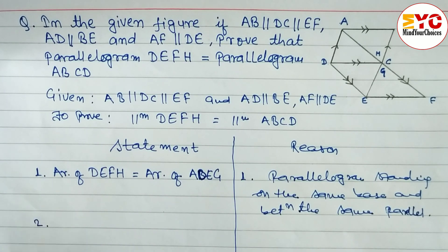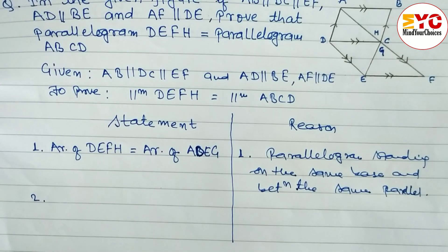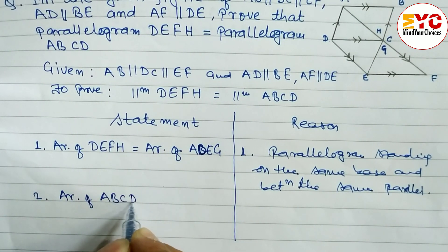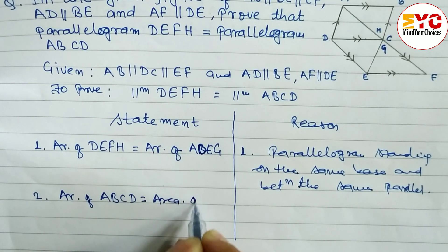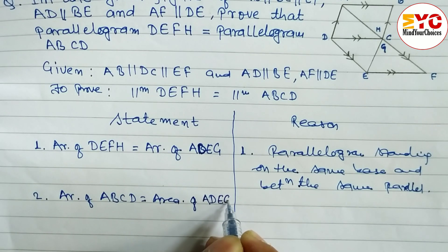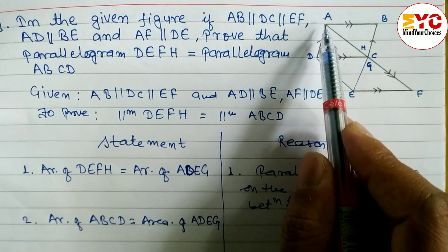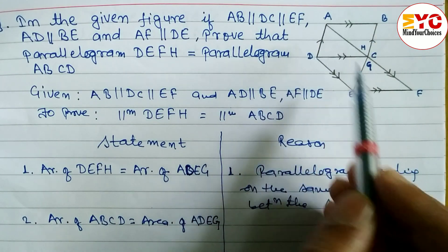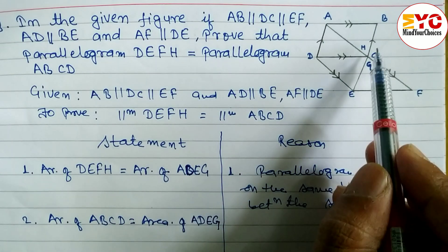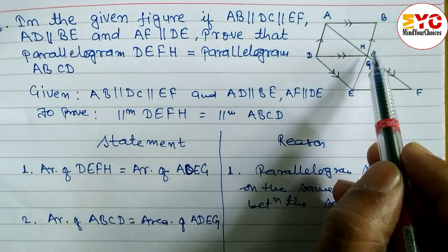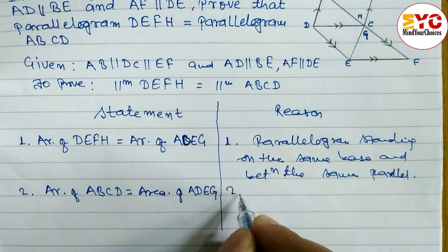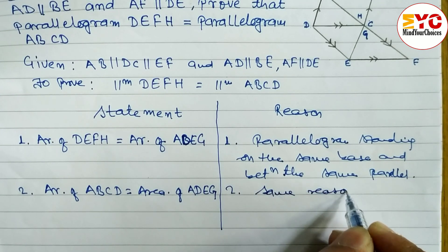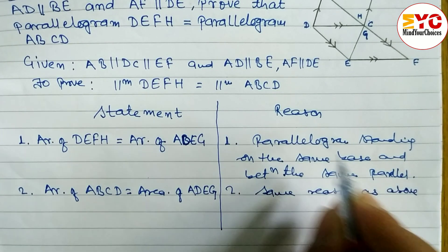In statement number two, looking at the diagram: area of parallelogram ABCD is equal to area of parallelogram ADEG. Both are equal because they are standing on the same base AD and between the same parallel lines. The reason is the same as in number one.